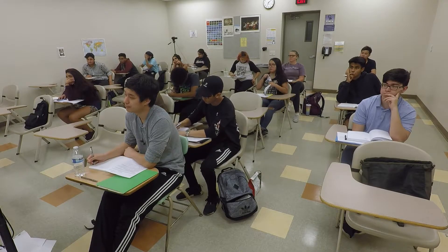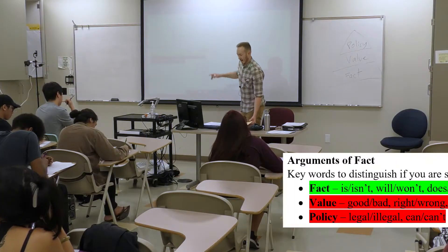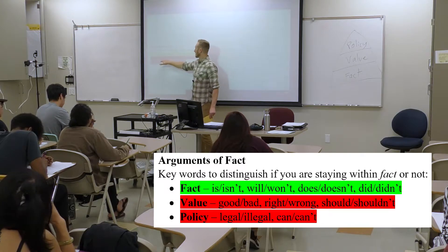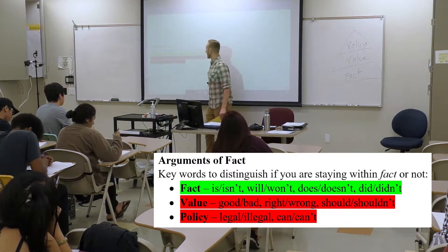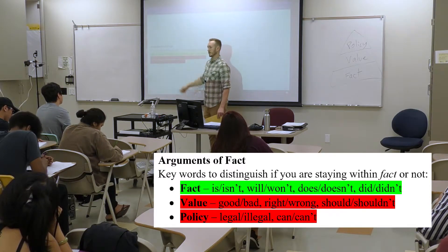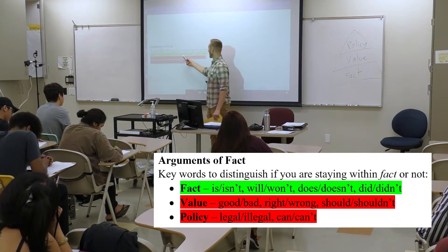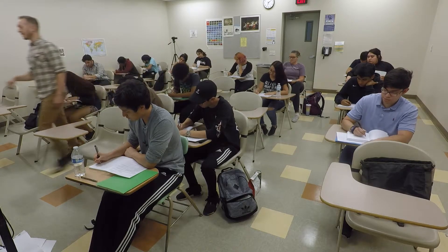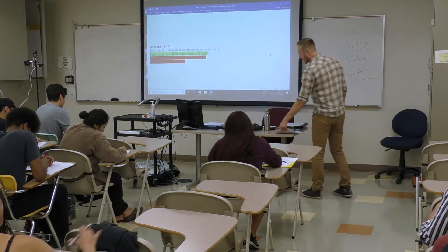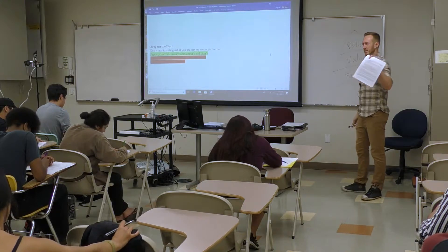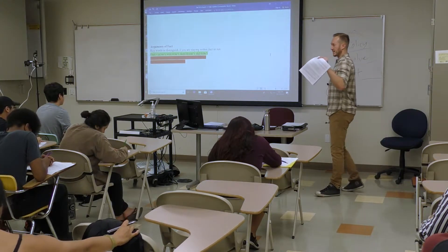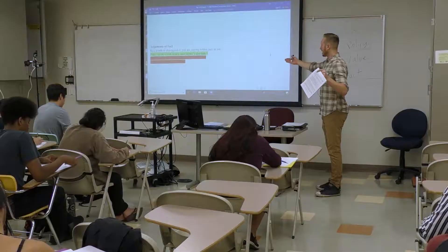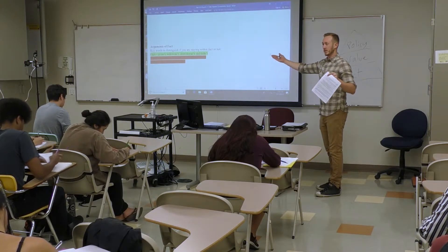Key words you might want to remember: when dealing with fact, think about it as "this is or isn't this way," "it will or won't do that," "it does or doesn't do this," "it did or didn't do that." Once we get to value, then it becomes good or bad. I didn't tell you to say good or bad in this essay, but maybe it's already obvious that you're implying it — it may be obvious, you just don't go there.